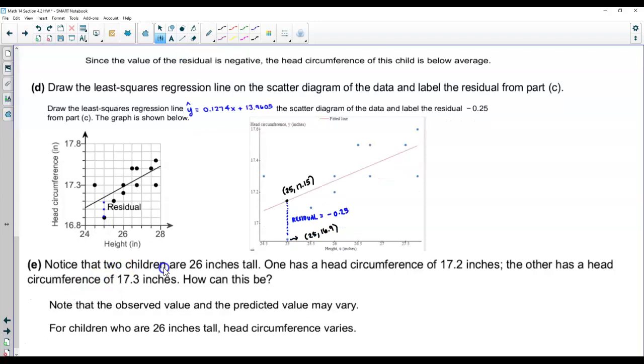Now in part E it says, notice that the two children are 26 inches tall. One has a head circumference of 17.2 inches. The other has a head circumference of 17.3 inches. How can this be? Well, note that the observed value and the predicted value may vary. So for children who are 26 inches tall, head circumference varies as well.